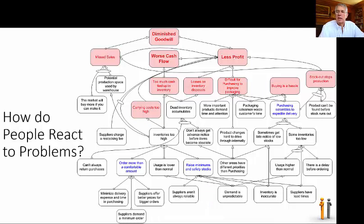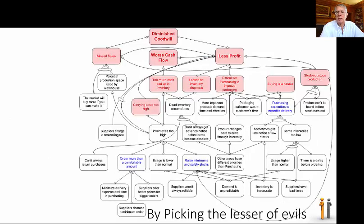So, how do people react to problems? For example, stockouts stop production. So, if we look up here on the top right, where we have stockouts stopping production, and we wonder, what do people do who have production stoppages? Really, there's nothing worse for a manufacturer. They'll do anything to avoid them. And the obvious answer is they choose between evils. More inventory is less bad than stopping production.